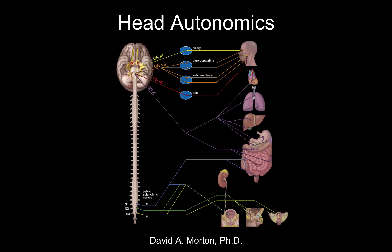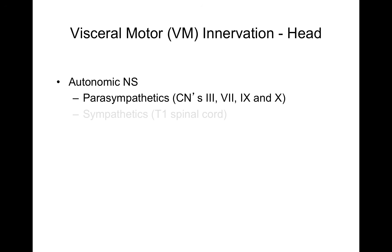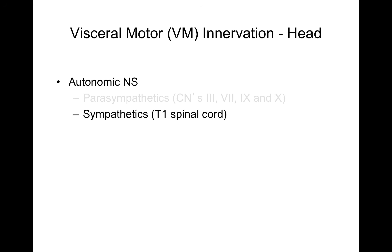Let's discuss head autonomics — all the autonomics that go to the head. Visceral motor innervation is another way of saying the autonomic innervation of the head. There are two components: parasympathetics, which are cranial nerves 3, 7, 9, and 10, and sympathetics, which come from the T1 level of the spinal cord.